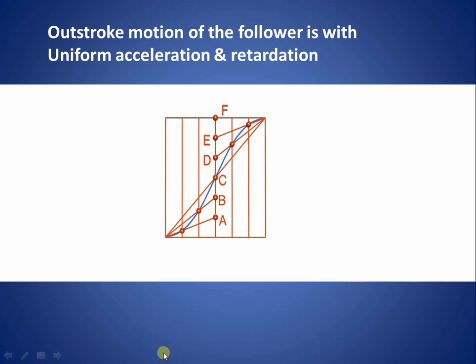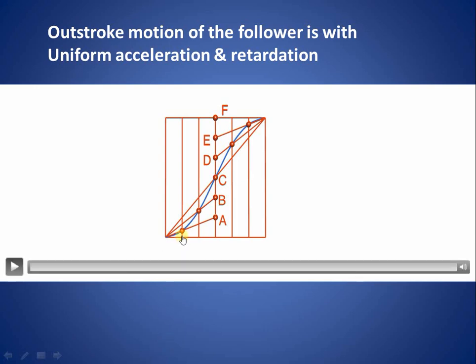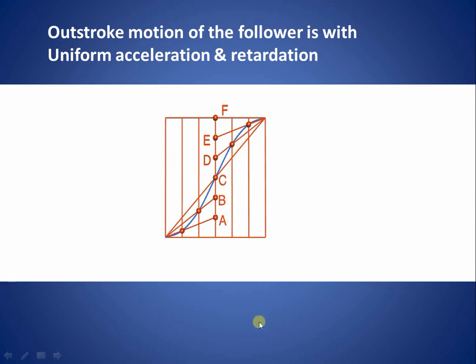In this way we can draw the outstroke motion of the follower with uniform acceleration and retardation. As seen earlier, we can transfer these vertical distances onto the base circle by dividing it into six equal parts, and similarly draw the cam profile. In this way we have seen how to draw the outstroke motion of the follower with simple harmonic motion and with uniform acceleration and retardation, and how to draw the corresponding part of the cam profile. Thank you very much for watching; please subscribe to our channel.